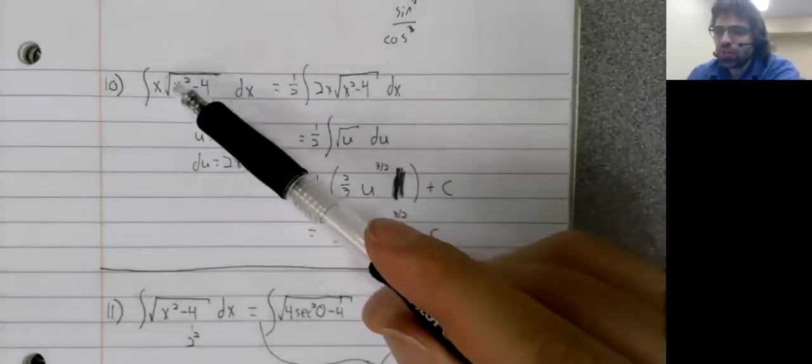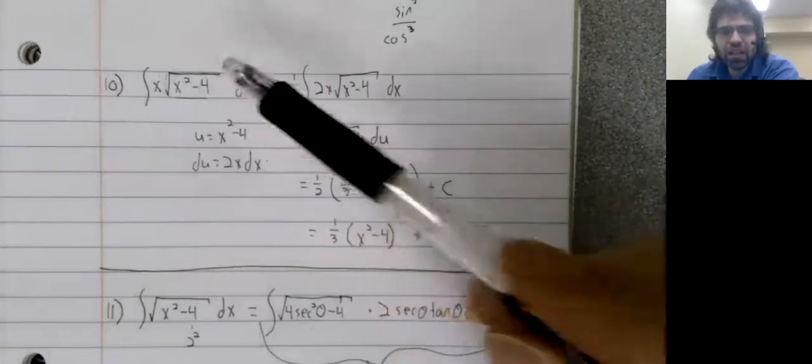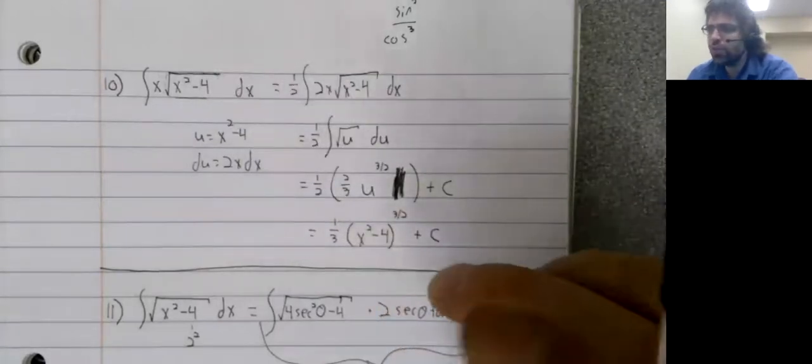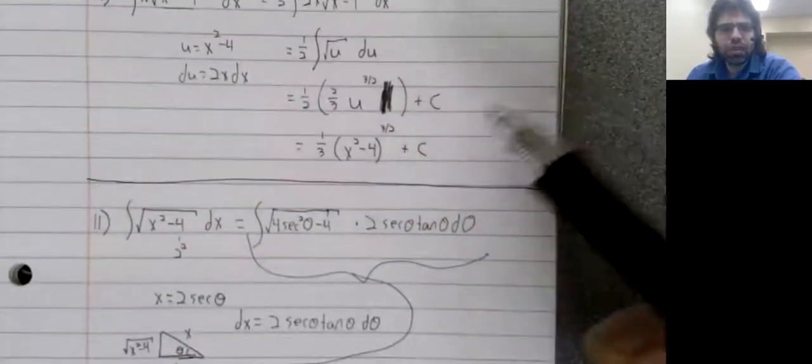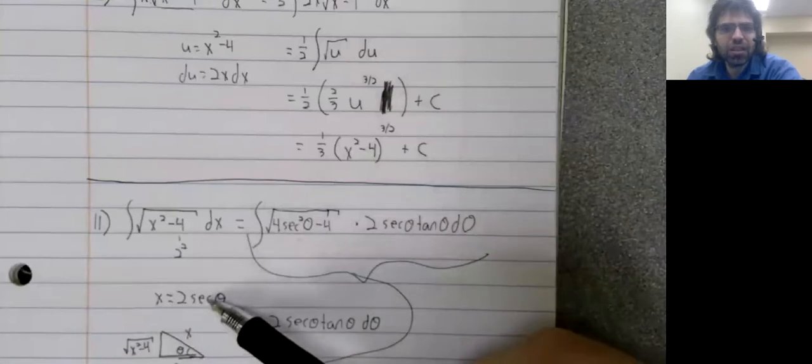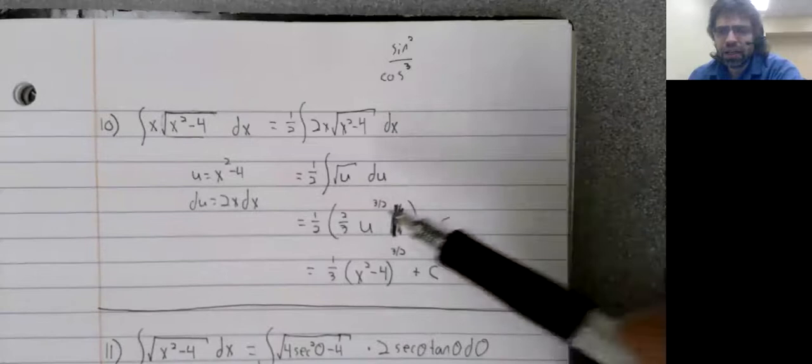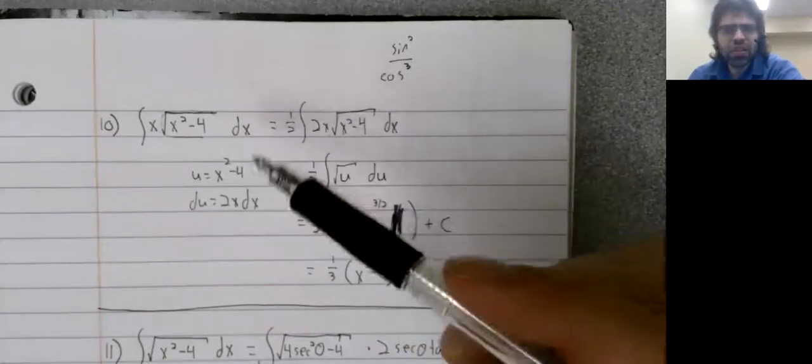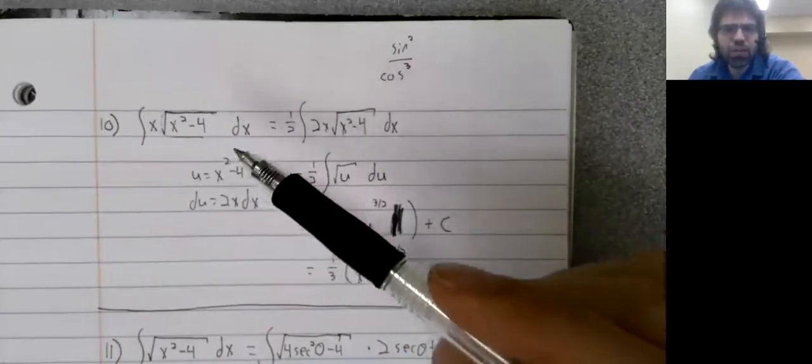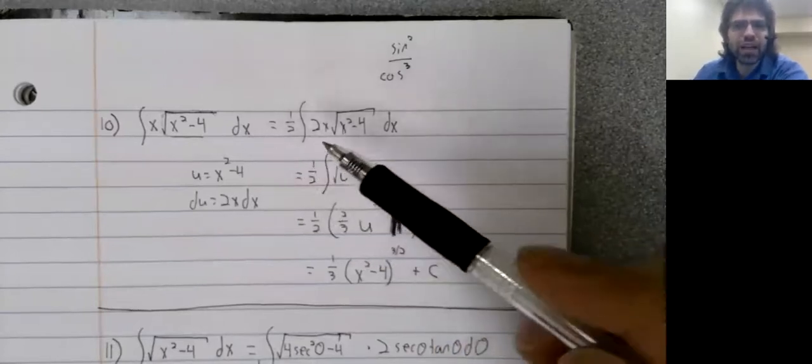If you see the square root of x squared minus a squared, then you can try letting x be a times the secant of theta. And that's not necessary here, but it will work. It will give you the correct answer.